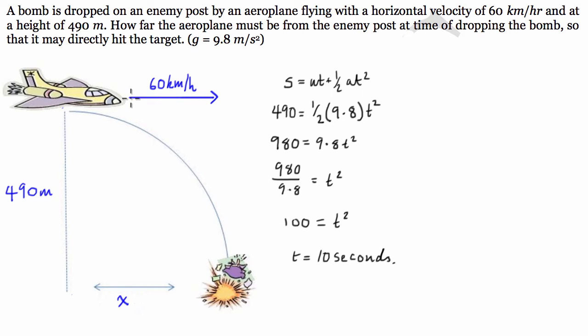So basically what we've just figured out is if we're flying at 490 meters above the ground, it's going to take the bomb 10 seconds to hit the ground. So we know we're carrying 60 km/hour worth of horizontal velocity throughout the entire duration of the bomb's trip. So we're going to convert this into SI units, meters per second, by dividing by 3.6. And we should be getting 16.67 meters per second.